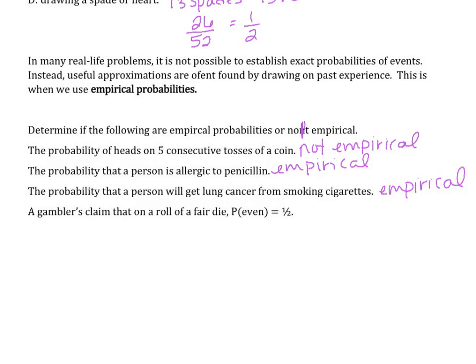The gambler's claim that on a roll of a fair die, the probability of an even event is one half. Again, this is not empirical because we can actually determine probability.